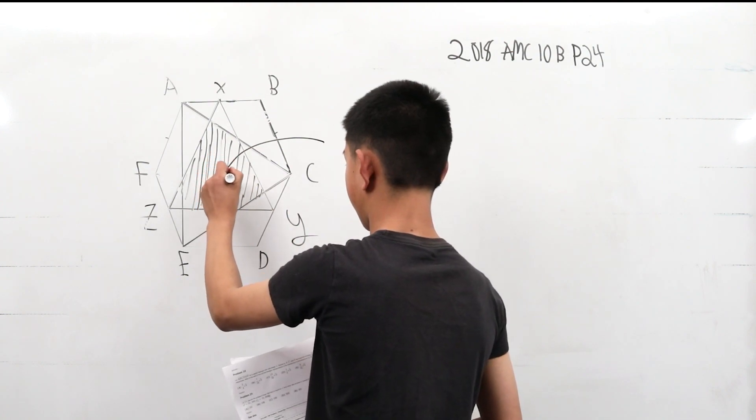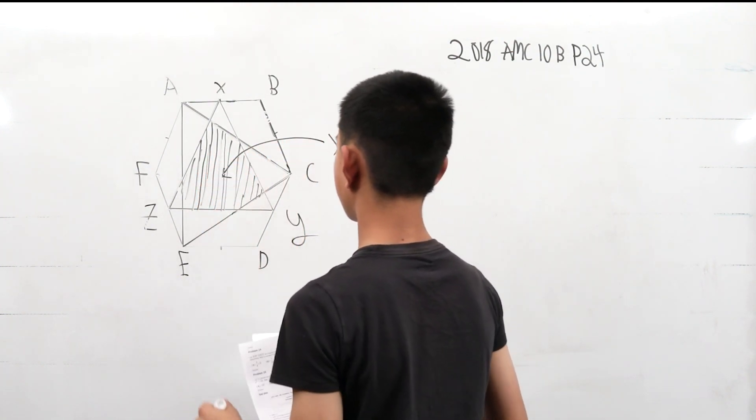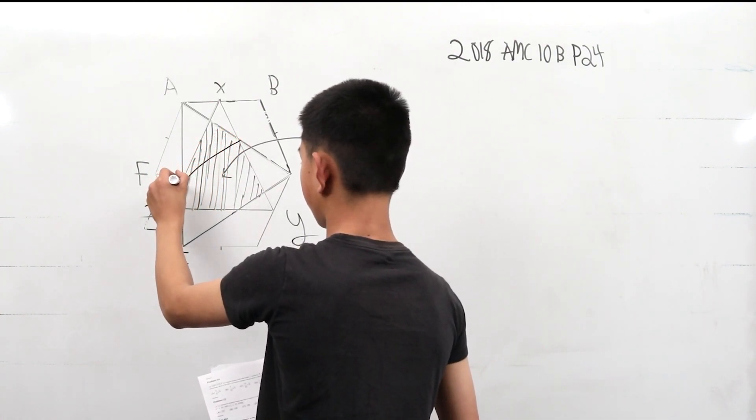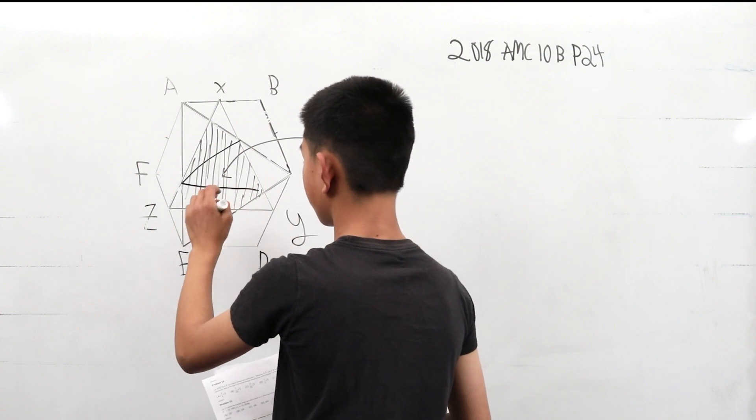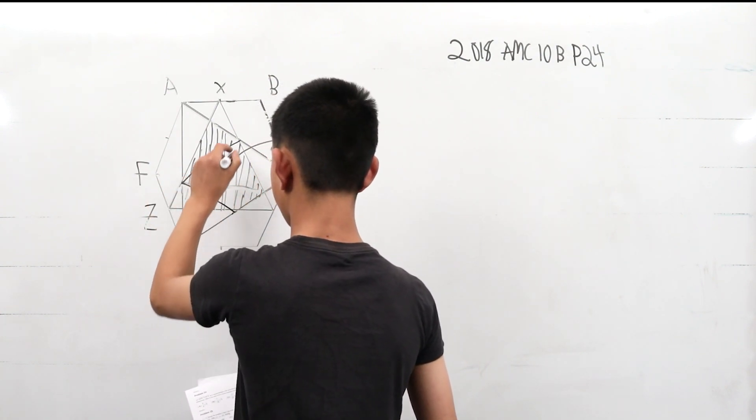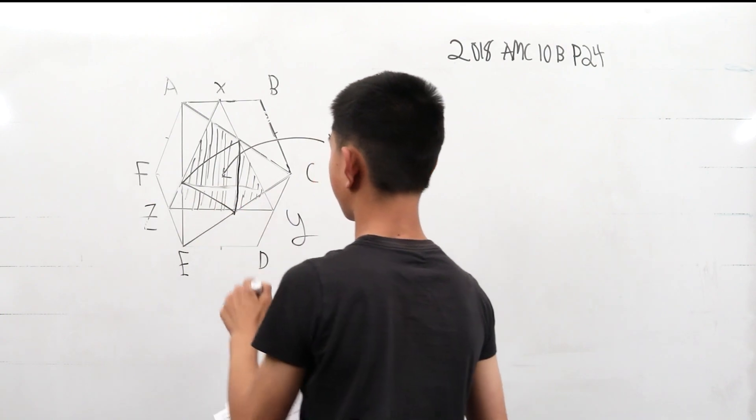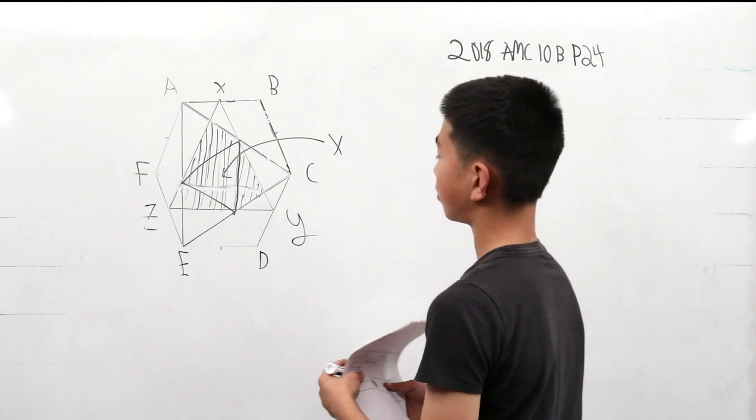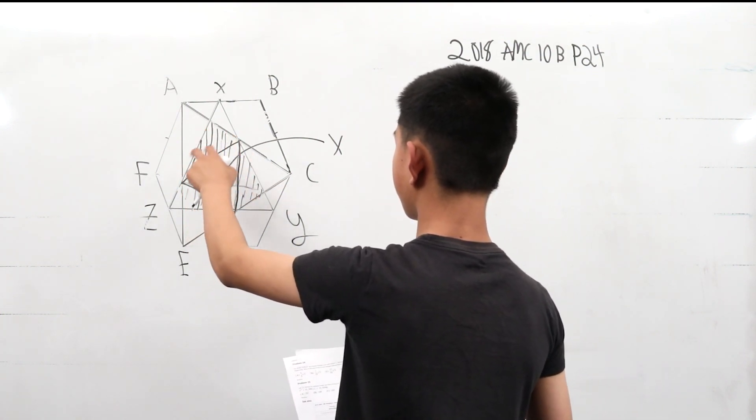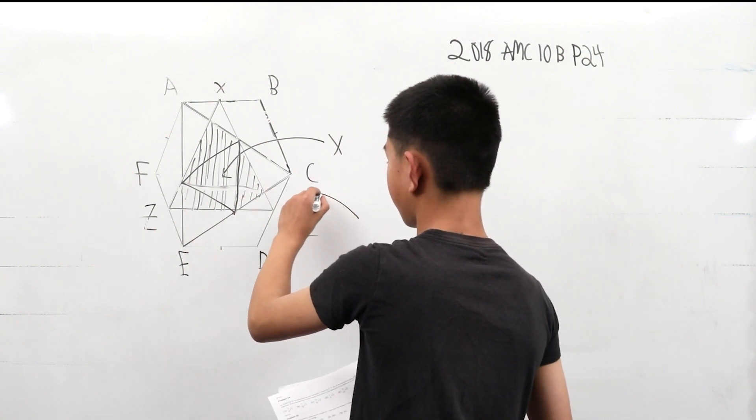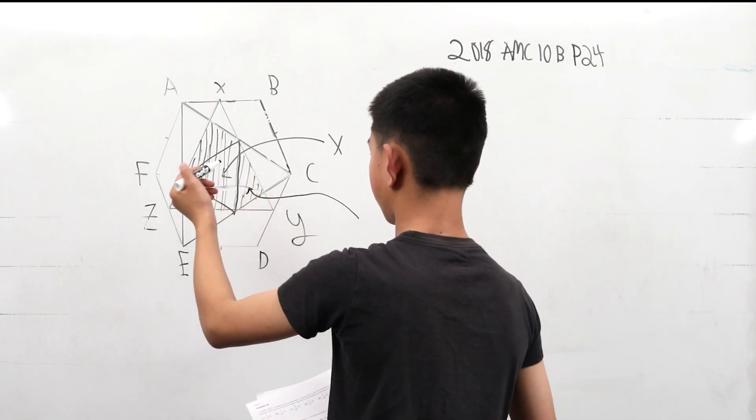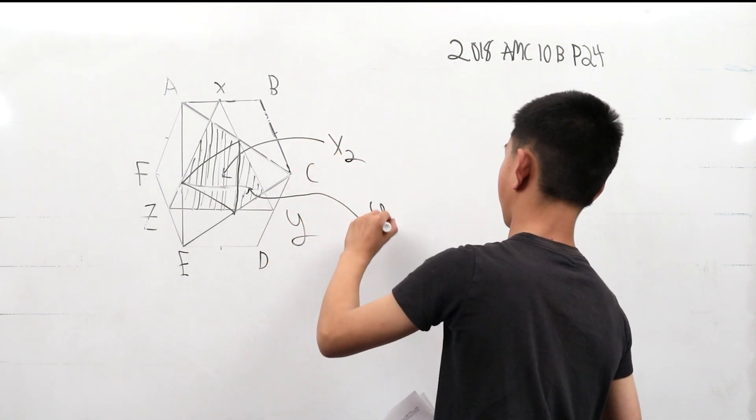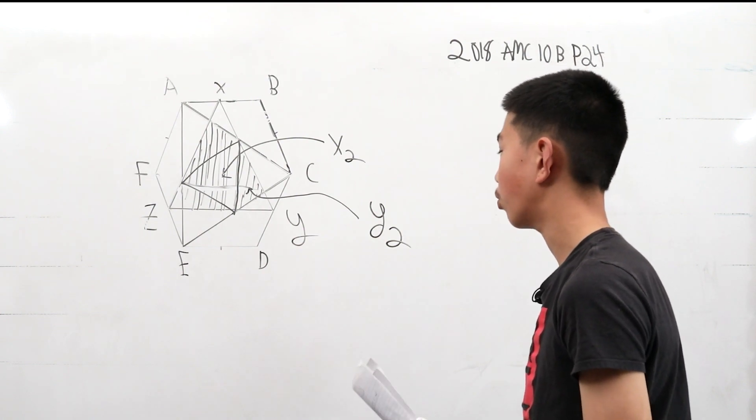Let's call this area X. Actually, we shouldn't call that X because when we draw some lines, we call this triangle here X in the center, which is equilateral. And these three, all these other outer triangles are the same. So let's just call this X2 and Y2 to differentiate between the X and Ys.